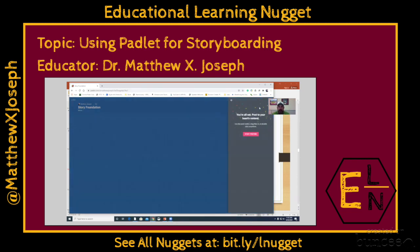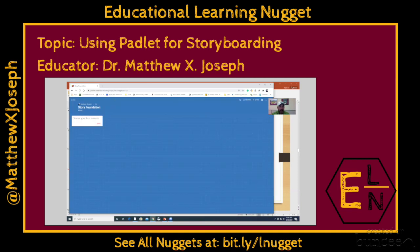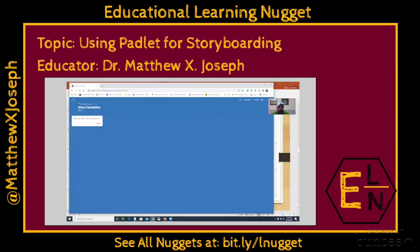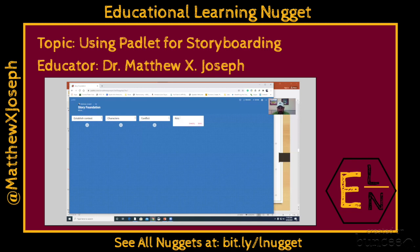The reason I like this is that you can start adding columns for students, or have them do it themselves. So the first column I'm going to add is 'establishing context.' We can even copy and paste. Then we can add a second column for 'characters,' a third column for 'conflict,' and a fourth for 'resolution.' You can use Padlet to help students start to think about these story elements.